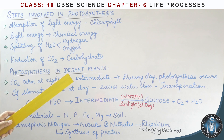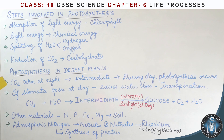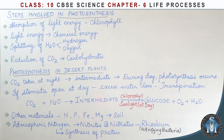This photosynthesis process is also used in desert plants. In desert plants, water loss is a problem, so the plants make adaptations. The stomata are opened in the daytime, which causes water loss.